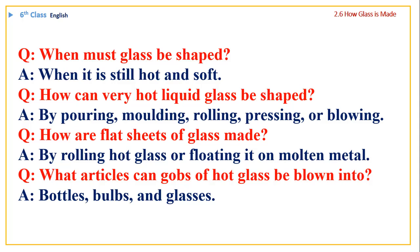How are flat sheets of glass made? By rolling hot glass or floating it on molten metal. What articles can gobs of hot glass be blown into? Bottles, bulbs, and glasses.